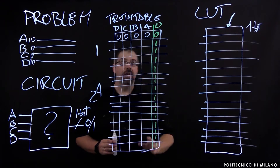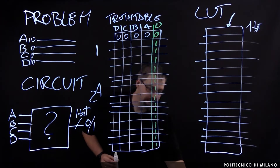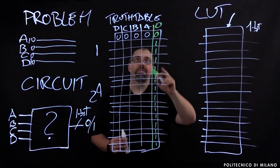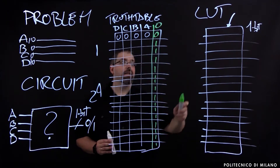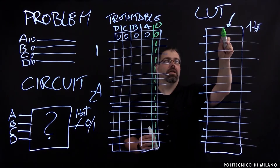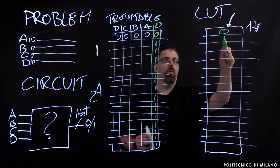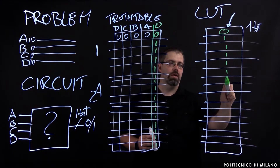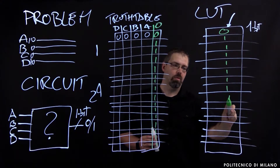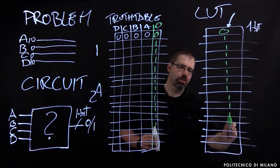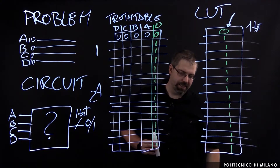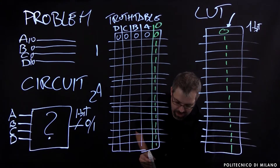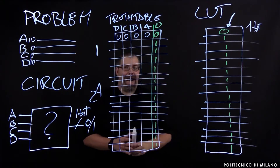Those outputs — 1s from the truth table — are the values we are going to store in the lookup table cells. So now we can take that information and copy it here: 0, 1, 1, 1, 1, 1, 1, 1, 1, 1, and so on and so forth through to the 16th line.